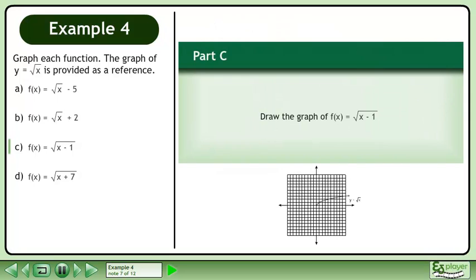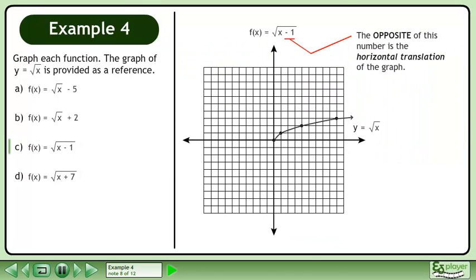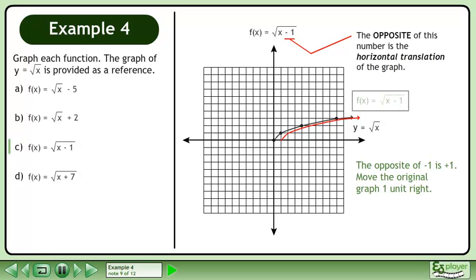In part c, draw the graph of f equals the square root of x minus 1. The opposite of this number is the horizontal translation of the graph. The opposite of negative 1 is positive 1, so move the original graph one unit right.